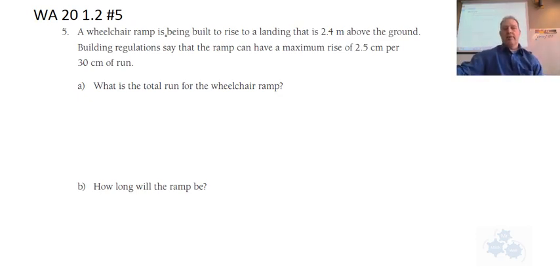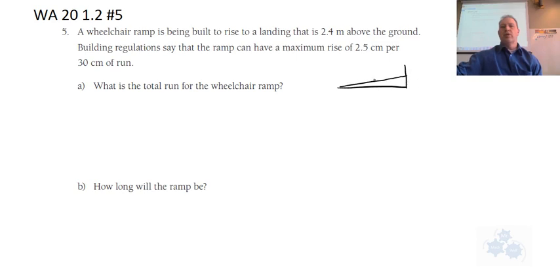So a wheelchair ramp is being built to rise to a landing that is 2.4 meters above the ground. It's a great idea to draw a sketch of the situation. So this is the wheelchair ramp right here — the slanted part — and this would be the 2.4 meters. It even says the word rise. So we've got a rise of 2.4. On our diagram, this would be a right triangle, and it's 2.4 meters above the ground.